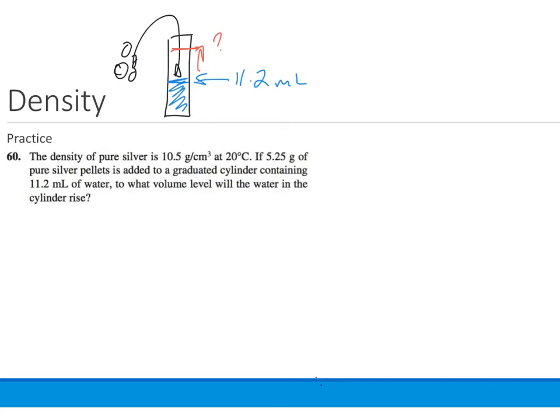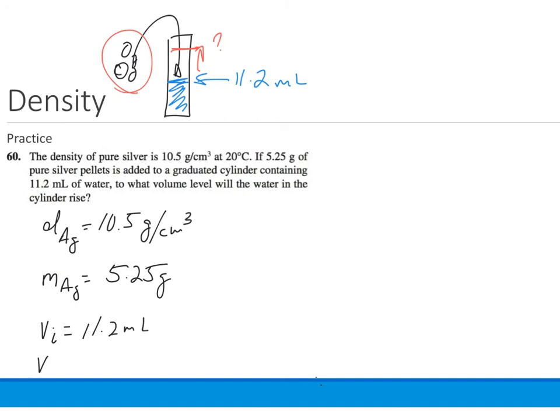That change in water level is going to be the volume of the pellets. So, let's take out some relevant information. The density of silver equals 10.5 grams per cubic centimeter. The mass of the silver pellets equals 5.25 grams. And the volume initial in the cylinder is 11.2 milliliters. What we're trying to find is the final volume.